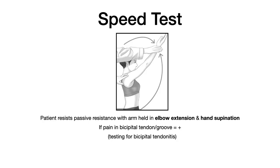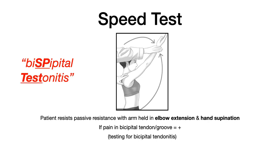Speed's test is testing for pathology in the bicipital groove, such as bicipital tendinitis. The patient extends their elbow, supinates their hand — arm straight out, palm facing up — and tries to raise the arm superiorly while the physician applies passive resistance. Pain felt in the bicipital tendon or groove is a positive Speed's test. Mnemonic: instead of saying 'bicipital tendinitis,' say 'bicipital testinitis' — which reminds you of Speed's test.